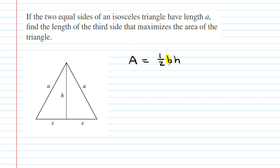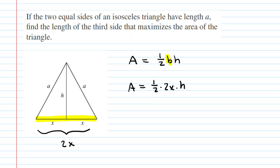As far as the base is concerned, if we look along the bottom of the triangle, we can see that the base would actually have a length of X plus X — in other words, 2X. So we can plug that into our area equation: we'll have one-half times 2X times the height. We can simplify this because one-half times 2 is just 1, so now we have area is equal to X times H.